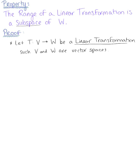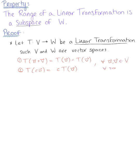If T is a linear transformation, we keep in mind those two properties: the transformation of vector U plus vector V equals the transformation of U plus the transformation of V, and the transformation of a scalar multiple C times vector U equals the scalar multiple of that transformation. This holds for all vectors U and V in vector space V, and for all scalars C.